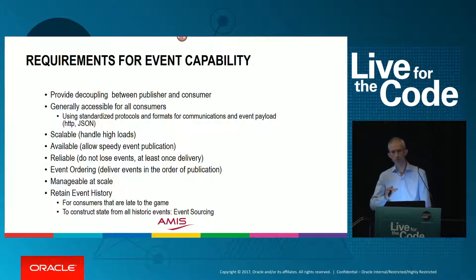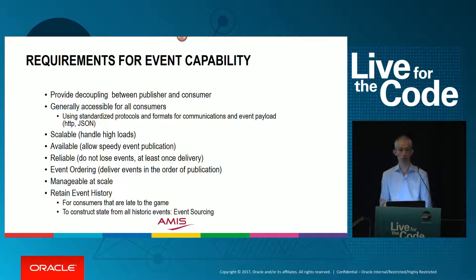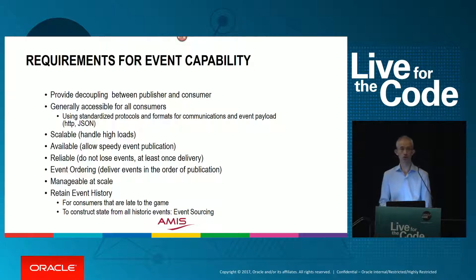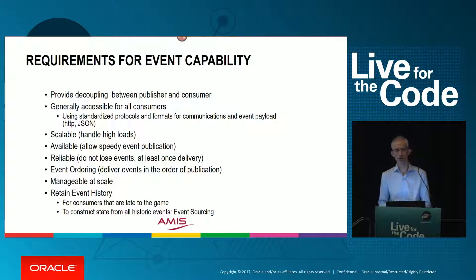The most non-trivial requirement, and one that for example is not supported by JMS, is the final one: retention of the event history. Any consumer who has not been available for some time, or any consumer new to the game, is still able to get the events. If our eventing mechanism can do this, it opens up possibilities for event sourcing — whereby instead of storing and updating the state of our business objects all the time, we only record the events and reconstruct the state from those events. It's a whole new architecture pattern quickly gaining traction, and it scales much more easily.